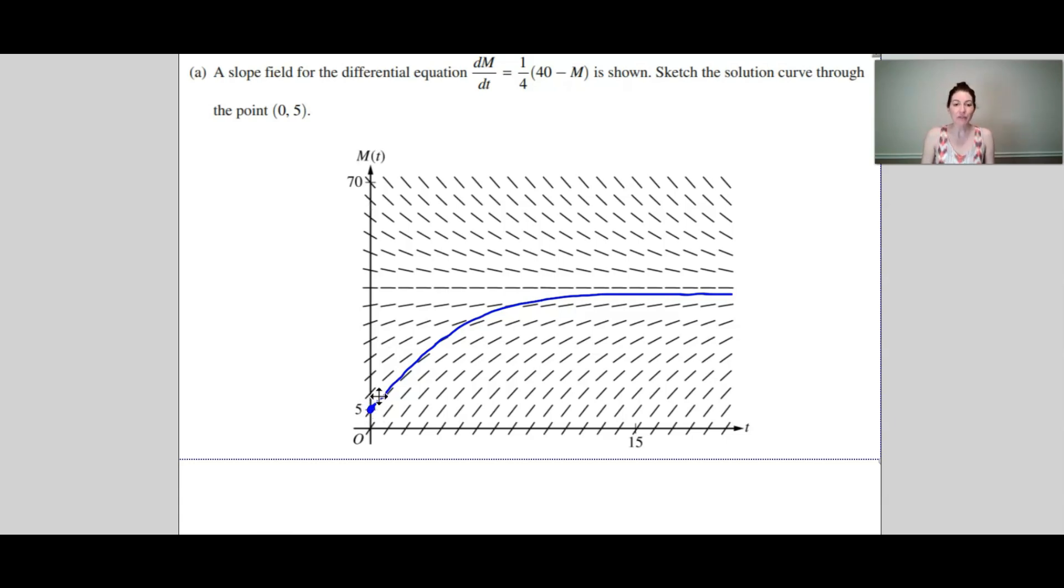So I would mark that point and then you're going to follow the slope field, follow those little tangent lines until you reach the horizontal asymptote that occurs at 40. And you want to make sure to go to both ends of that graph.